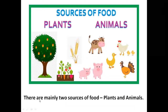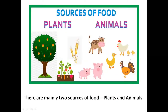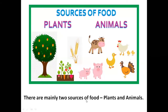There are mainly two sources of food: plants and animals. We learned that we get food from plants and animals in different ways. Repeat after me: there are mainly two sources of food, plants and animals.